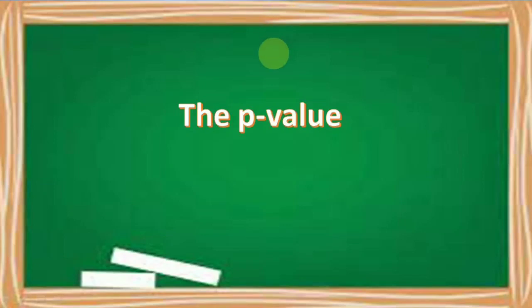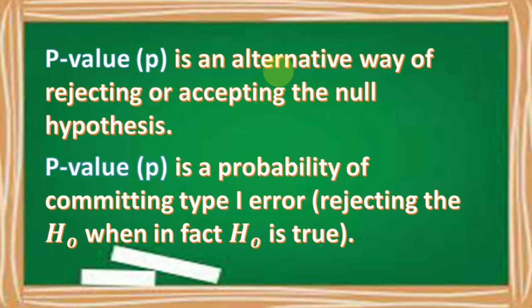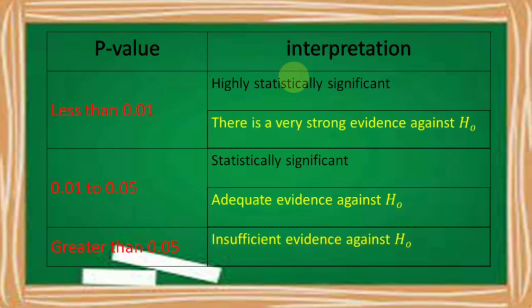We are going to discuss the p-value. The p-value, or p, is an alternative way of rejecting or accepting the null hypothesis. The p-value is also a probability of committing a Type 1 error — that is, rejecting the null hypothesis when in fact the null hypothesis is true. Here is the table for p-value with the corresponding interpretation.